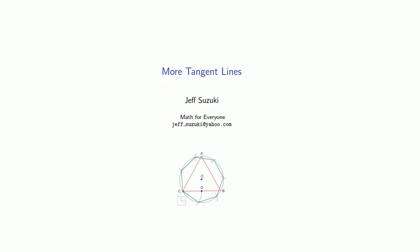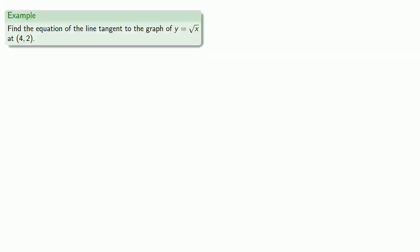So what else can we do with the tangent line? Let's write the equation of the line tangent to the graph of y equals square root of x at the point (4, 2).